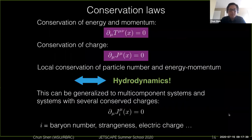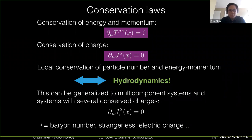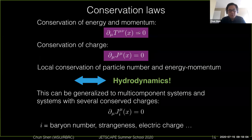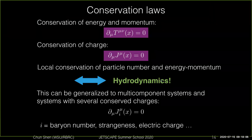In terms of conservation laws, if we translate them into mathematical equations, they are basically written in two current equations. One is the evolution of energy-momentum conservation: d_mu T^{mu zero} = 0, and the other is the conservation of the conserved charge. Basically, when you solve these two partial differential equations you get hydrodynamics.